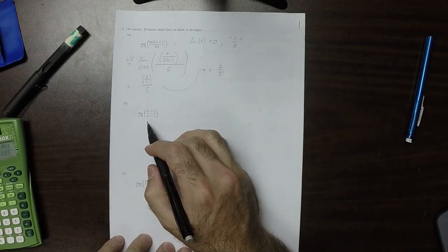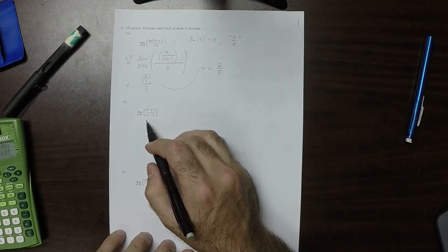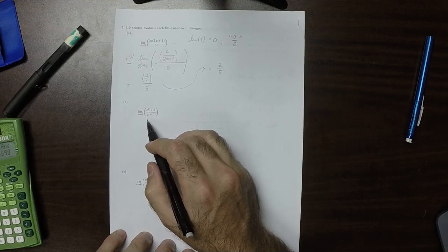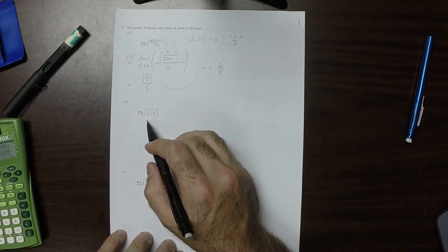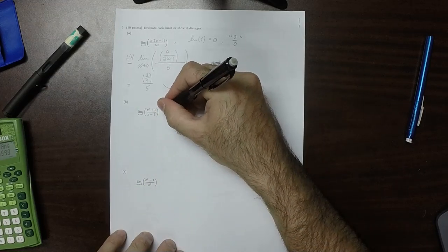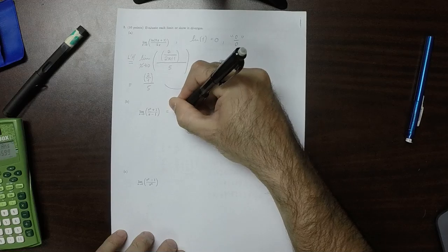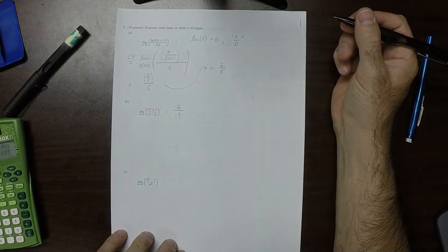Part B. This one is meant to double check you and make sure you're not using L'Hopital's rule just any old time. So the numerator evaluates to 2. And the denominator evaluates to negative 1. And that's the answer.